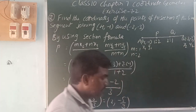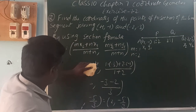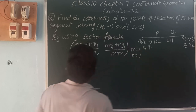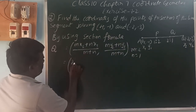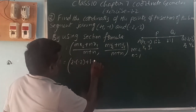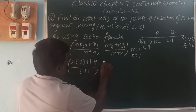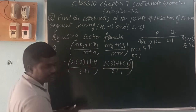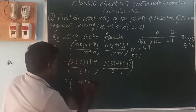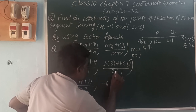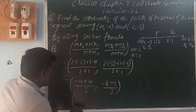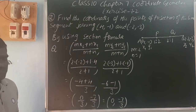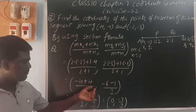Now for point Q, the ratio is 2 is to 1, so M is 2 and N is 1. Substituting: 2 into x2 which is minus 2, plus 1 into x1 which is 4, by 2 plus 1 which is 3. Next, 2 into y2 which is minus 3, plus 1 into y1 which is minus 1, by 3. That gives minus 4 plus 4 which is 0, by 3. And minus 6 minus 1 which is minus 7, by 3. So the trisectional point Q is 0 comma minus 7 by 3.